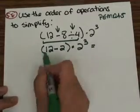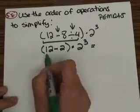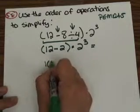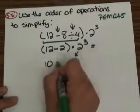I still want to finish what's inside the parentheses first. So 12 minus 2 gives me 10. Bring down times 2 cubed.